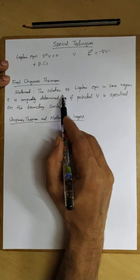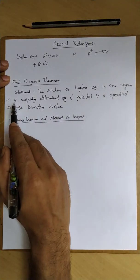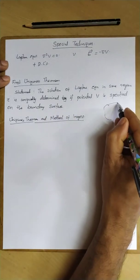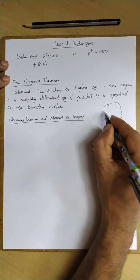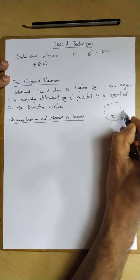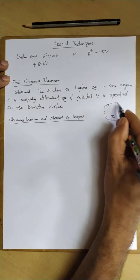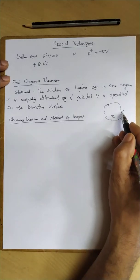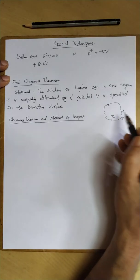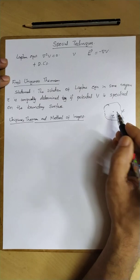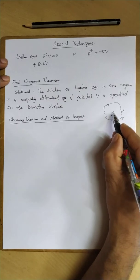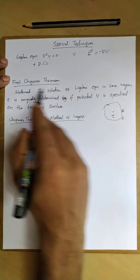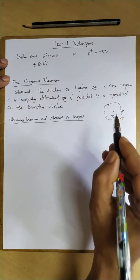The uniqueness theorem states that the solution of the Laplace equation in some region tau is uniquely determined if the potential V is specified on the boundary surface S. Suppose we have a region tau — the volume is tau and the surface is S. If you have a potential satisfying the Laplace equation and a given boundary condition, that solution will be the unique solution to that problem.